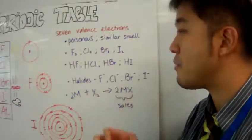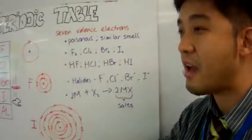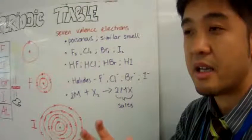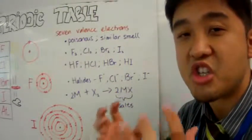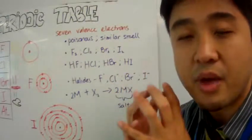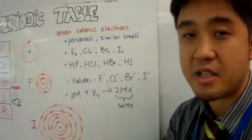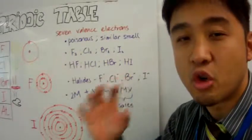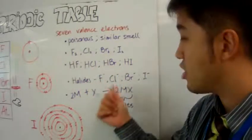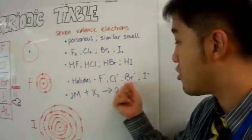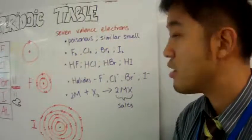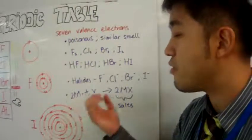Halogens, when they become ionized - that means when they gain an extra electron into their valence energy shell - become an anion, which is a negative ion. These negative ions in the halogen group are called halides. So you have fluoride, chloride, bromide, and iodide.